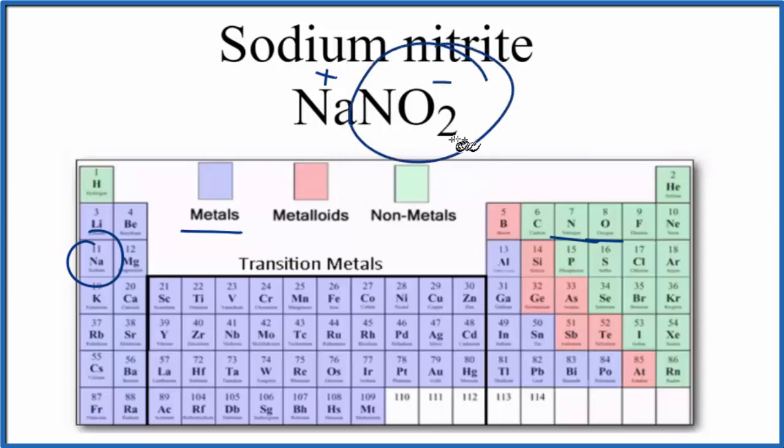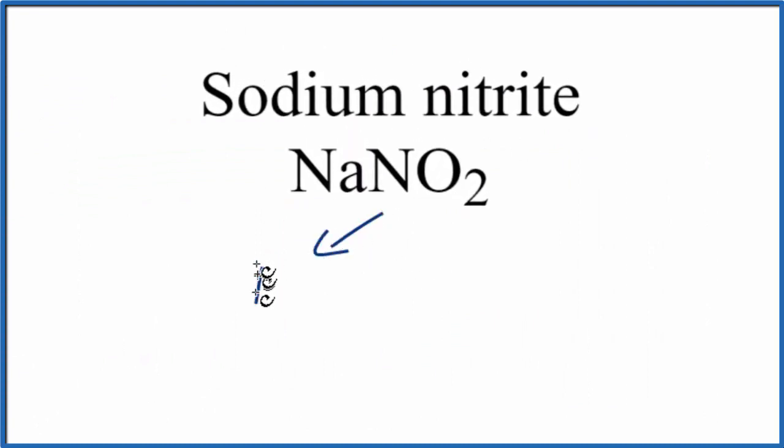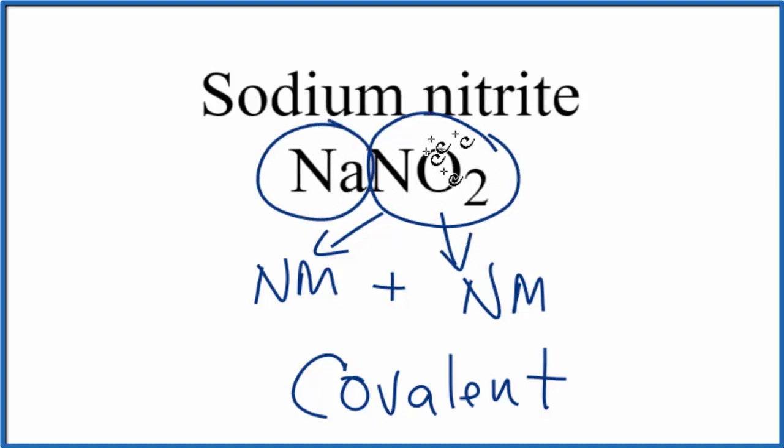Let's talk about that nitrite ion just for a moment. So we said nitrogen, that's a nonmetal. Oxygen is also a nonmetal. Nonmetal plus nonmetal, that gives us a covalent bond. That's also called molecular bond. So the nitrite ion, the bond between the nitrogen and the oxygens, that's a covalent bond. But the bond overall between the sodium ion and the nitrite ion, because they're ions, is ionic.